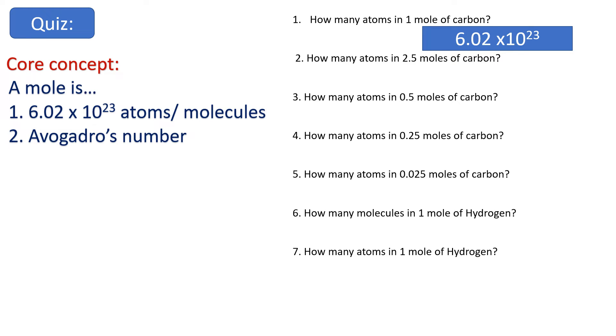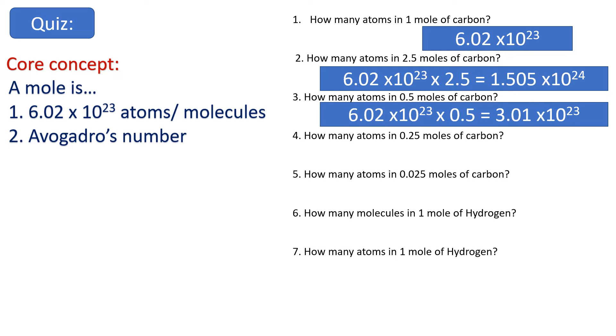Number two, how many atoms in 2.5 moles of carbon? Well, if I know one mole of carbon is 6.02 times 10 to the 23, I can simply multiply that number by 2.5 to get the answer of 1.505 times 10 to 24. If you didn't get the answer because you're struggling to use your calculator correctly, may I suggest you pause now, figure out what buttons to press until you get that answer, and then use that moving forward. Number three, how many atoms in 0.5 moles of carbon? So exactly the same again guys, you're simply taking Avogadro's number and multiplying it by 0.5 to get 3.01 times 10 to the 23. Notice that number is half the original amount because it's 0.5.